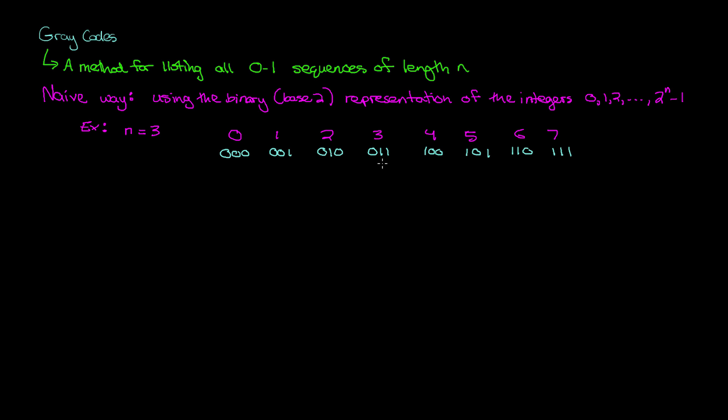The base 2 representation of a number is similar to a base 10 representation in that the rightmost position represents the units, and the next rightmost position represents the 2's place. So here 3 is equal to having one 2 and then one unit. The representation for 6 gives us 1 in the 4's position and 1 in the 2's position. So this is one way to write out all of the 8 different 0, 1 sequences of length 3.